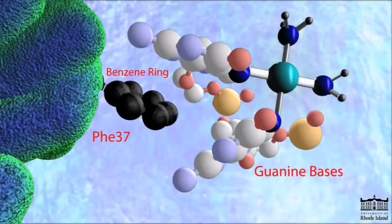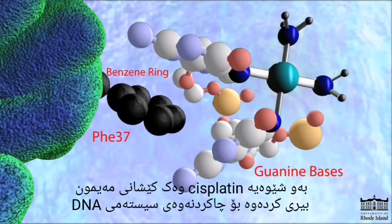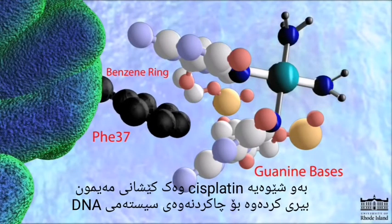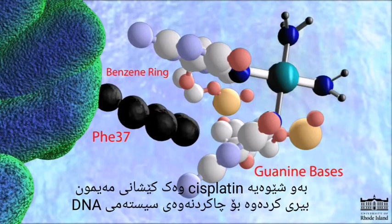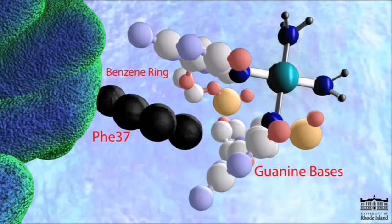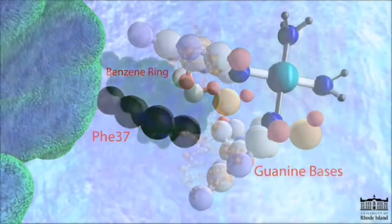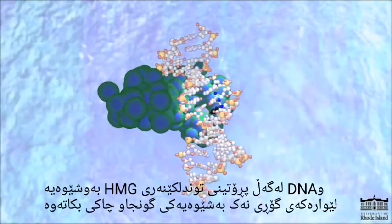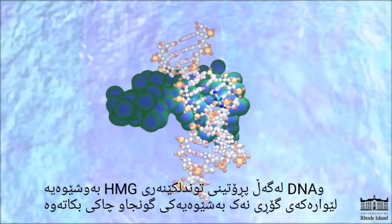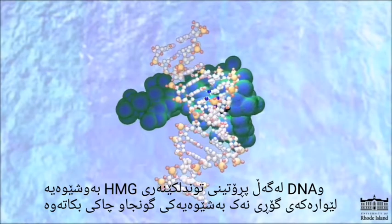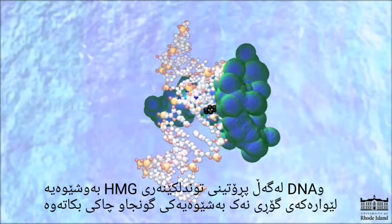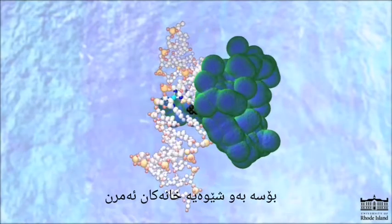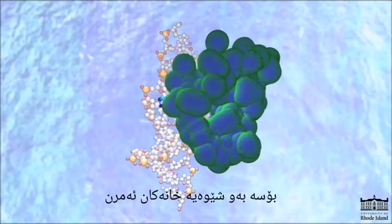In this way, cisplatin can be thought of as a monkey wrench in the DNA repair system. With the HMG protein bound to the DNA, the modified strand is not repaired properly and so the cell dies.